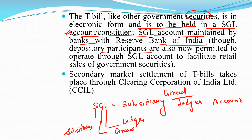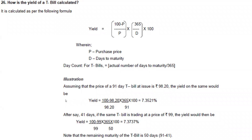Settlement of treasury bills takes place through the Clearing Corporation of India Limited, CCIL. This is how the settlement of treasury bills takes place.